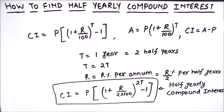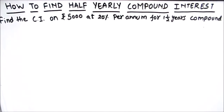We will be solving two examples in this video. Our first example is: find the compound interest on Rs. 5,000 at 20% per annum for one and a half years, compounded half yearly.